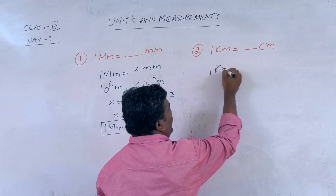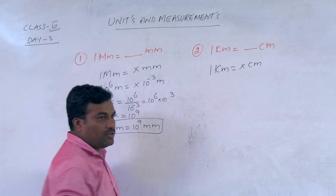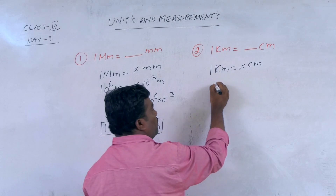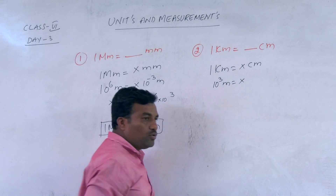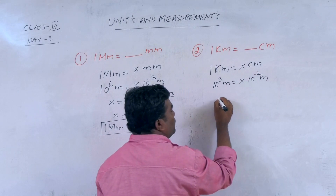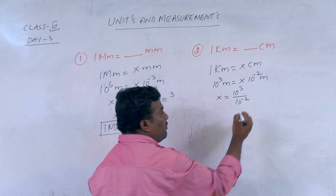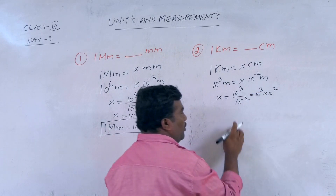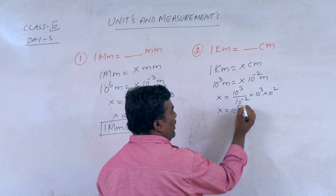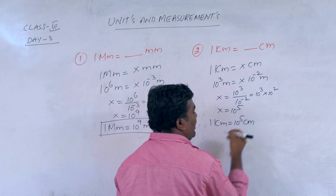So here, 1 kilometre equals x centimetres. Kilo is also a multiple, so that converts to 10 to the power of 3 metres equals x into centimetres — centimetre also converted to SI: 10 to the power of minus 2 metres. So x equals 10 to the power of 3 divided by 10 to the power of minus 2, which equals 10 to the power of 3 into 10 to the power of 2 — denominator goes to numerator, negative power becomes positive. x equals 10 to the power of 5. Therefore, 1 kilometre equals 10 to the power of 5 centimetres.